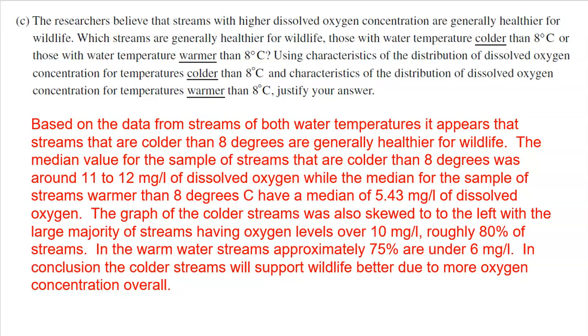That's what it says. Higher dissolved oxygen concentration is healthier for wildlife. We just made a box plot where the median was on the low side around 5.43. So that's clearly lower on the warmer streams. Clearly the answer here is that the colder streams are going to typically have higher oxygen concentrations, which makes them healthier. So I started off with that. Give a good paragraph with a nice intro answering the question. Based on the data from streams of both water temperatures, it appears that streams that are colder than 8 degrees are generally healthier for wildlife.